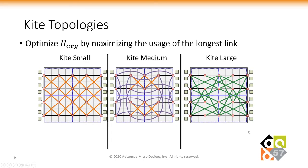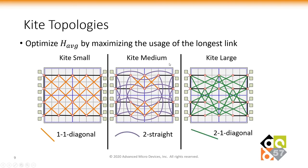We utilize these new design-time metrics to design a family of topologies using links of different lengths. First, we use a small link which can traverse up to one interposer router diagonally and build a topology optimizing our design-time metrics — we call this KiteSmall. Second, we utilize a longer link traversing up to two routers straight — we call this KiteMedium. Finally, we use a long link traversing up to two routers in one direction and one router in the other — we call this KiteLarge. These topologies are each constructed to optimize the effective average hop count and bisection bandwidth.